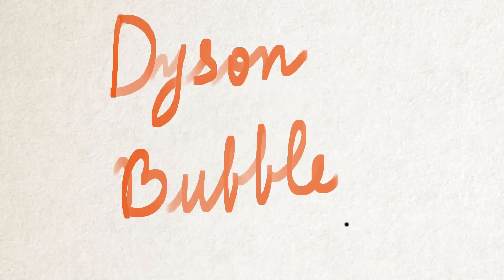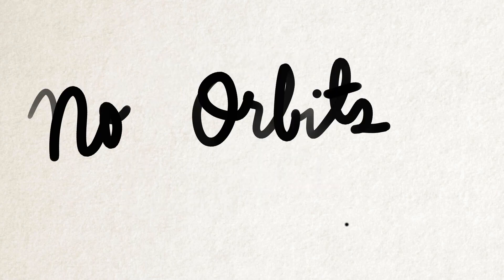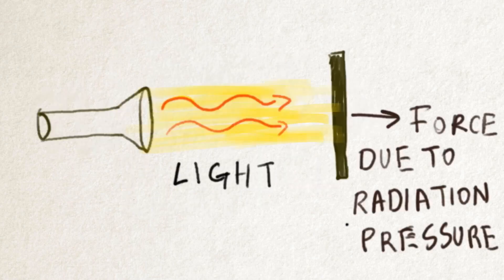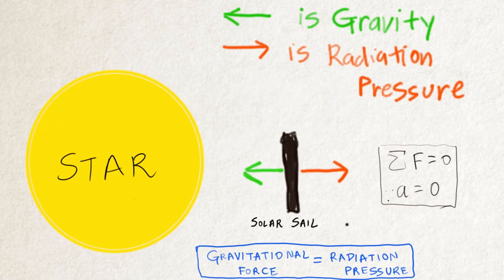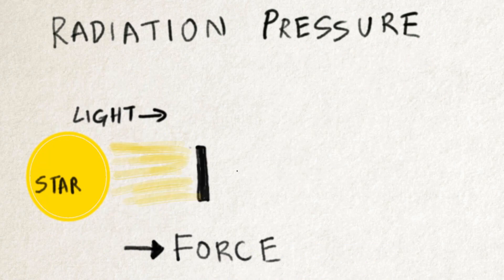Another option is a Dyson Bubble. Here the components will not orbit the star but will use radiation pressure to counteract the gravitational pull, and the components will be stationary with respect to the star. The radiation pressure is the push provided by the massive amounts of light produced by a star.